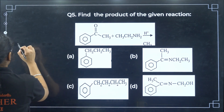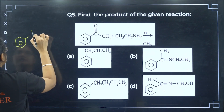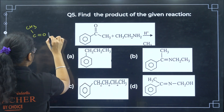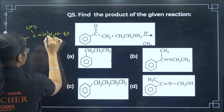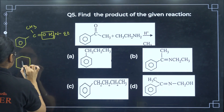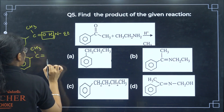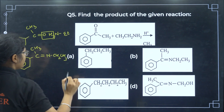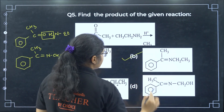Find the product of the given reaction: we have a benzene ring with CH3 and C double bond O group. When reacted with ethylamine (NH2 with an ethyl group), H2O is eliminated and we get a compound with C double bond CH3, N, CH2 and CH3. The correct answer is option B.